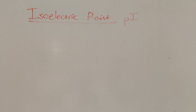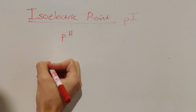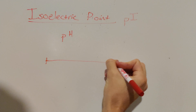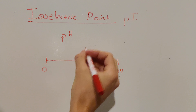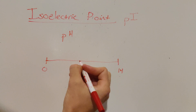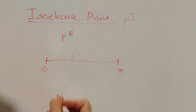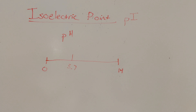The isoelectric point is a specific point, or really a specific pH, in which your amino acid is going to have a net charge of zero. In order to understand isoelectric points, it's necessary to understand pH. pH is on a scale from 0 to 14, and your isoelectric point is going to be somewhere in the middle of the scale where the net charge is equal to zero — for example, maybe slightly acidic at around 3.7.